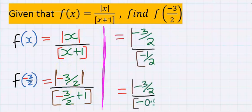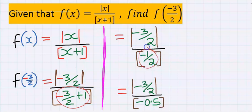If you solve the denominator carefully, you're going to get minus 1 over 2, which is the same thing as minus 0.5.